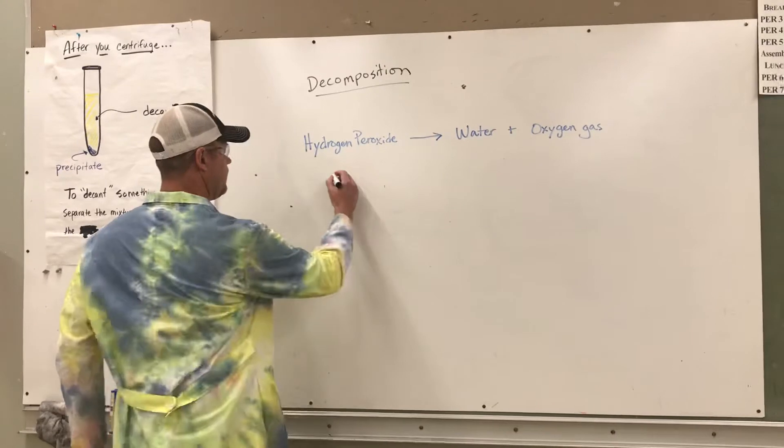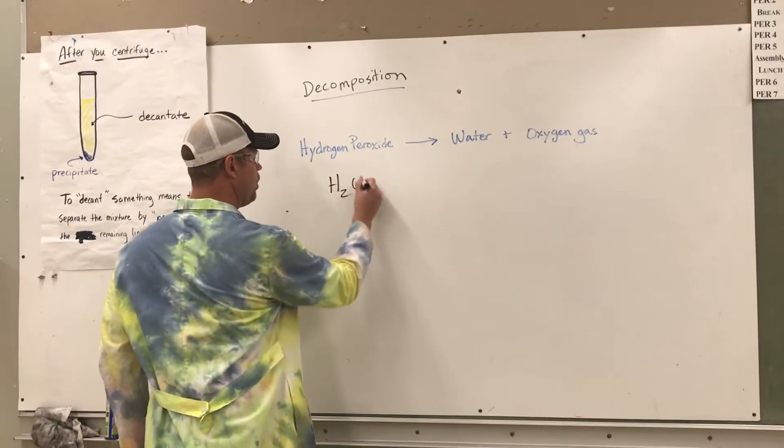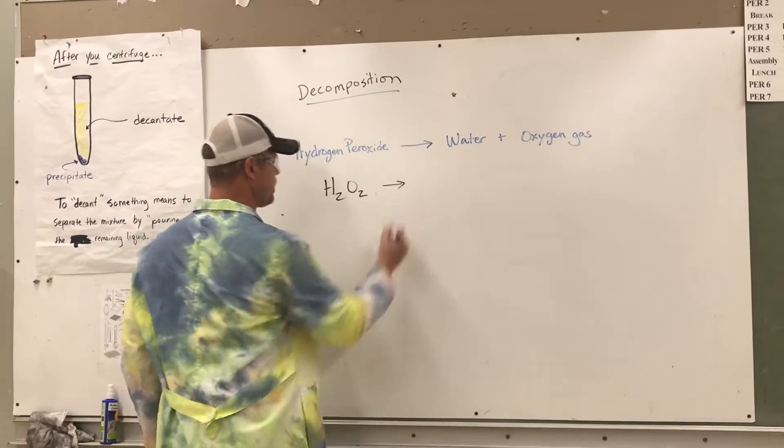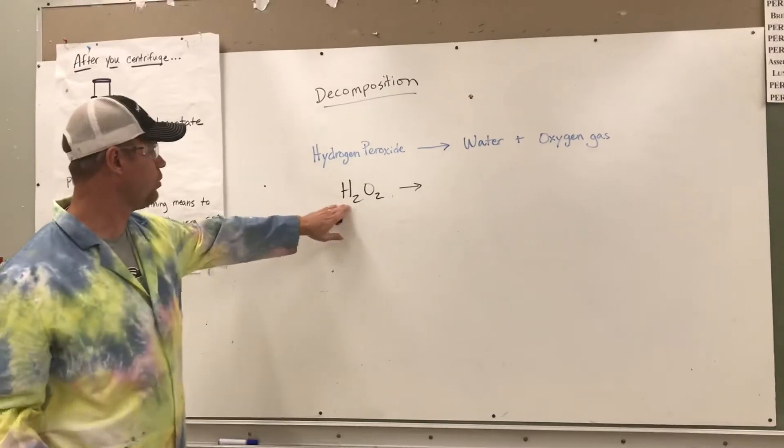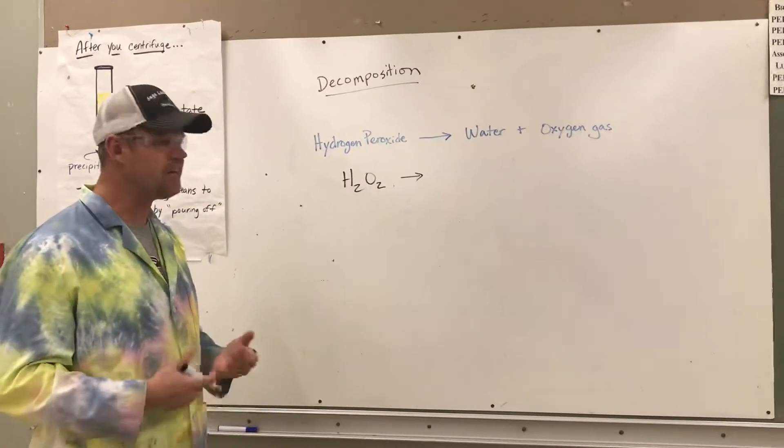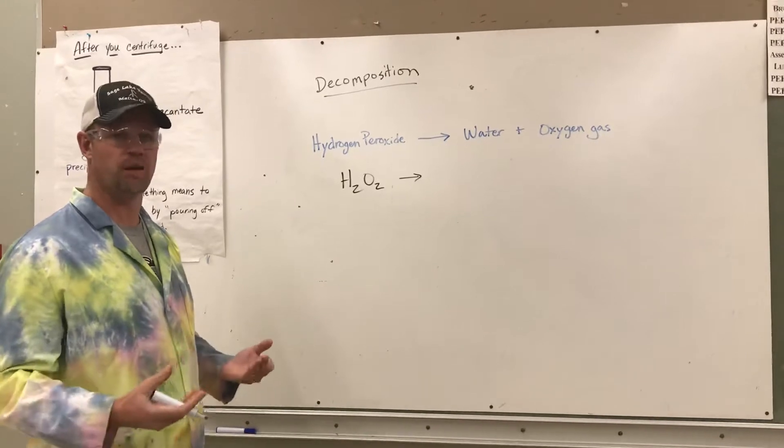Here's what it looks like. H2O2. Hydrogen peroxide is literally a water molecule with an extra oxygen atom attached. And it's kind of unstable.